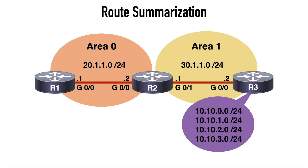Let's look at this from the perspective of OSPF now. OSPF does not have an automatic summarization option as we see in EIGRP. Also, unlike EIGRP where we can perform summarization on any router, OSPF summarization can only be performed on either an area border router (an ABR) or an autonomous system boundary router (an ASBR). The summarization command is different for each scenario, so let's first look at this from the perspective of an ABR, which in our topology would be R2, sitting at the boundary of area 0 and area 1.